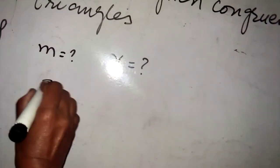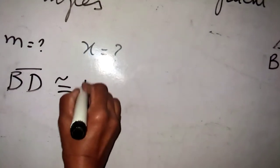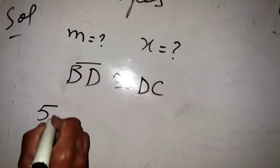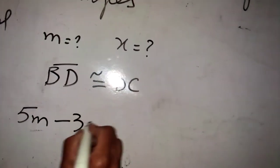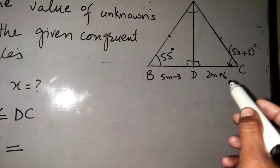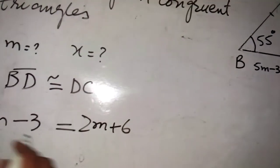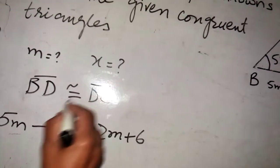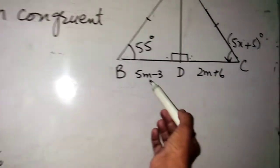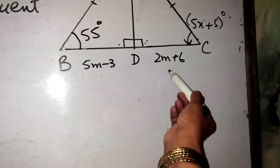BD measurement is 5m - 3 and it equals 2m + 6, because BD and DC are congruent. The value of BD is 5m - 3 when DC is 2m + 6.